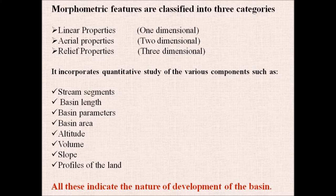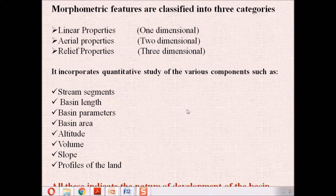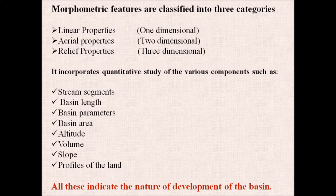Morphometric features have been categorized into three types: linear properties — those having one dimension; aerial properties — having two dimensions; and relief properties — having three dimensions. Using this technique, we study several components such as stream segments, basin length, various basin parameters including basin area, altitude, volume, slope, profile, and so on. All these indicate the nature of development of the basin.